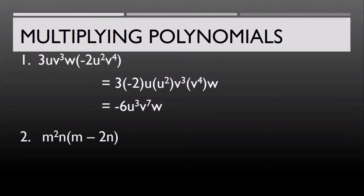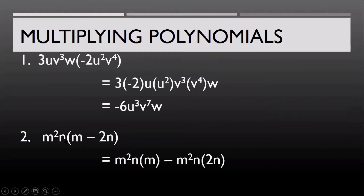For the second example, we have a multiplication of a monomial and a binomial. Here we're going to apply the law of distributivity. We distribute m²n to (m − 2n). That gives us m²n multiplied by m, minus m²n multiplied by 2n, which equals m³n − 2m²n². Then just combine the like terms.